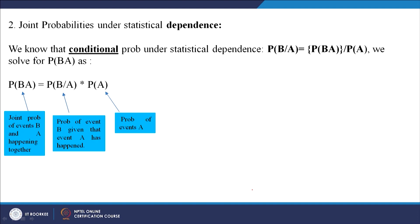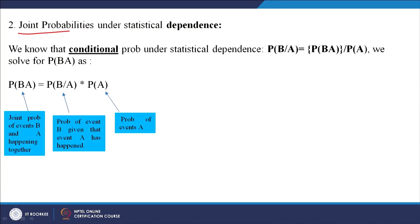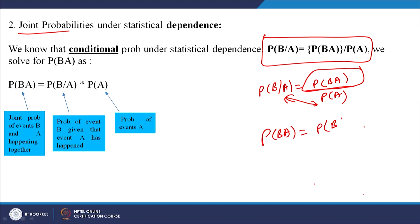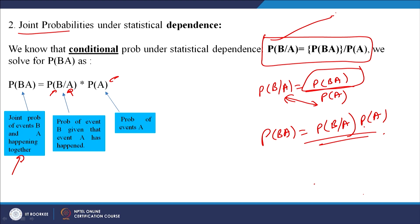Let us look at joint probabilities under statistical dependence. From the conditional probability formula P(B|A) equals P(BA) divided by P(A), we can derive joint probability: P(BA) equals P(B|A) times P(A). So joint probability is simply the conditional probability multiplied by the marginal probability. Since you already know the conditional probability under statistical dependence, you can easily calculate joint probabilities.